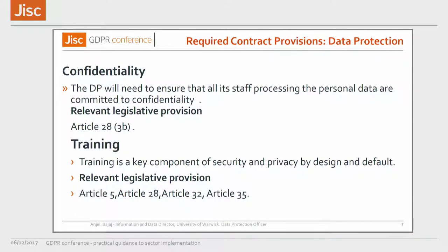Under Article 28.3b, confidentiality is key. The legislation expects that the processing staff of the processor are committed to confidentiality, whether that's expressed confidentiality under the contract, implied, or a statutory duty under legislation. Under Articles 5, 28, 32, and 35, it's very key that you insist the supplier has trained their staff on data protection who are processing your personal data for your particular arrangement. It's really, really important — I've come across situations where it gets very difficult and tricky when you're in a breach situation.